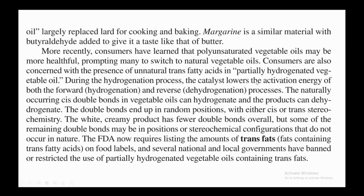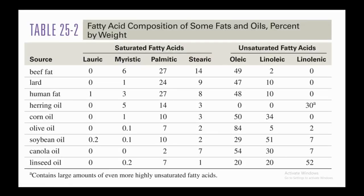During hydrogenation, the catalyst lowers the activation energy of both the forward hydrogenation and reverse dehydrogenation processes. The naturally occurring cis double bonds in vegetable oils can hydrogenate and the products can dehydrogenate, so double bonds end up in random positions with either cis or trans stereochemistry. The white creamy product has fewer double bonds overall, but some remaining double bonds may be in positions or stereochemical configurations not found in nature. The FDA now requires listing the amounts of trans fats on food labels, and several governments have banned or restricted use of partially hydrogenated vegetable oils containing trans fats.